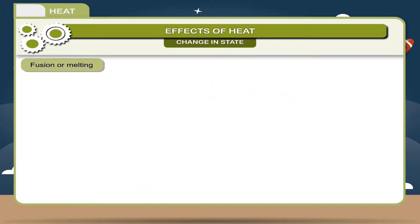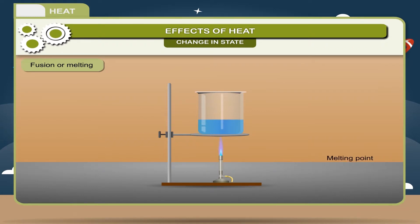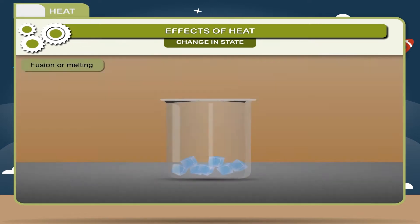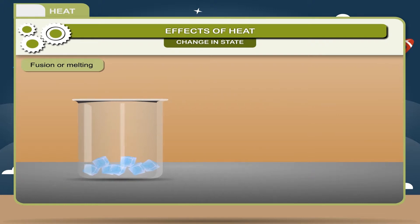Fusion or melting: fusion is a phenomenon in which a solid changes into liquid by absorbing heat. Melting takes place at a constant temperature called the melting point, which is different for different substances. For example, the melting point of ice is zero degree Celsius — ice (solid) melting at zero degree Celsius gives rise to water (liquid).